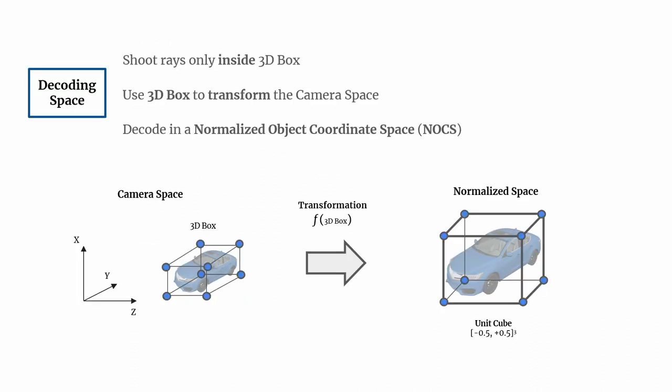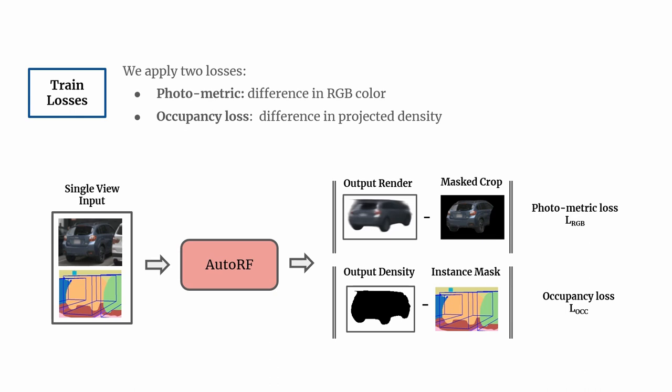In order to learn spatially consistent features across many samples of the same class, we decode observations into a normalized object coordinate space. We apply a photometric loss and an occupancy loss on the generated foreground and background masks.